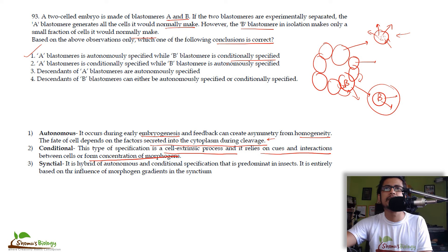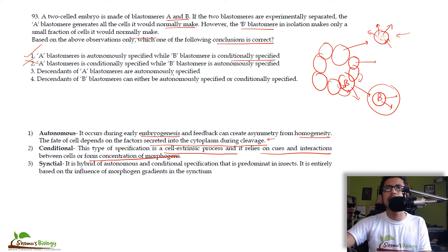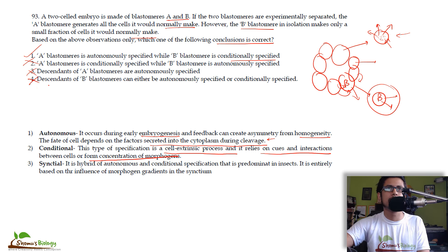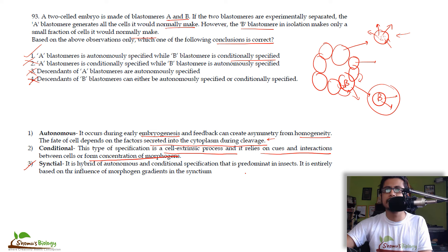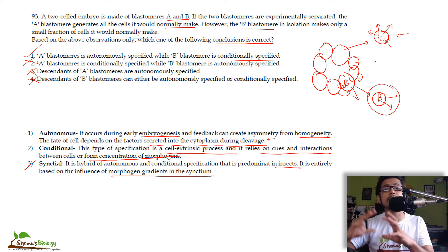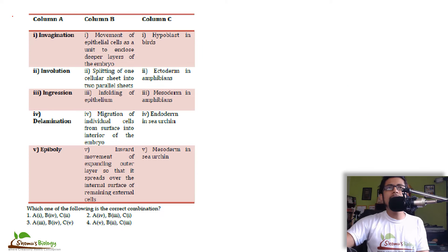Statement 1 — 'A is autonomously specified, B is conditionally specified' — is correct, so option 1 is the answer. Statement 2 reverses this and is wrong. Statements about descendants of A and B are not relevant here. Syncytial specification is a hybrid of autonomous and conditional specification, predominant in insects, entirely based on morphogen gradients in a syncytium with one giant cytosol and many nuclei after multiple nuclear divisions.